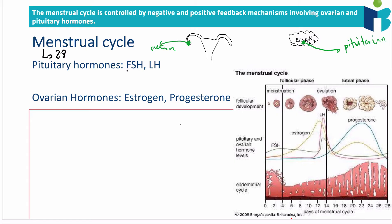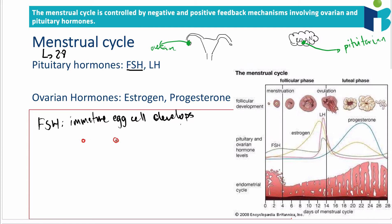The cycle starts with the release of the pituitary hormone FSH, which stands for follicle stimulating hormone. FSH causes the development of an immature egg cell, which grows in size and becomes surrounded by a cushion layer of follicle cells. This process happens in the ovaries.